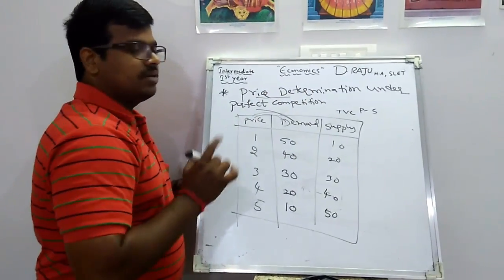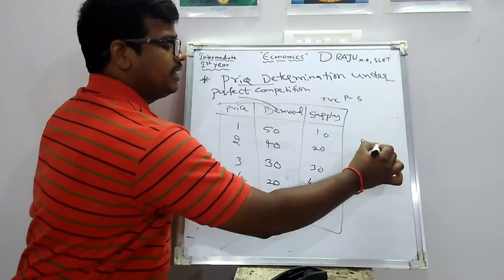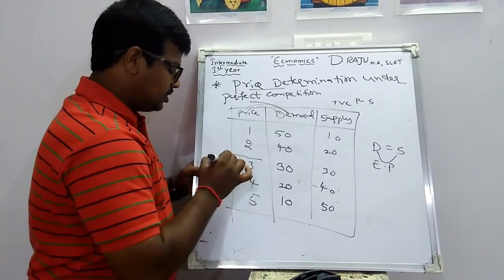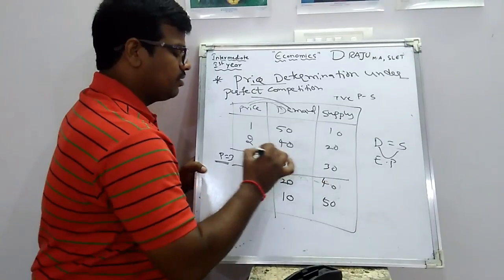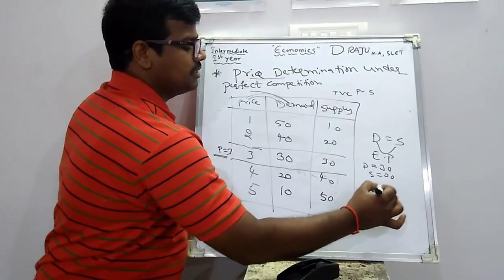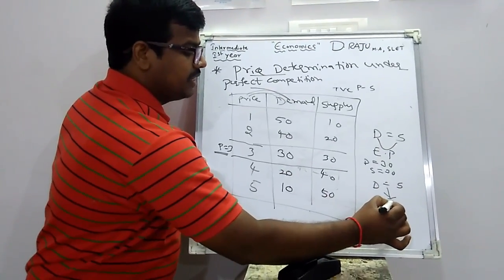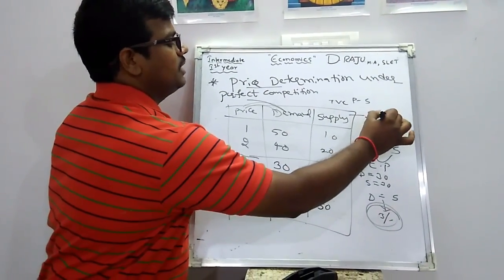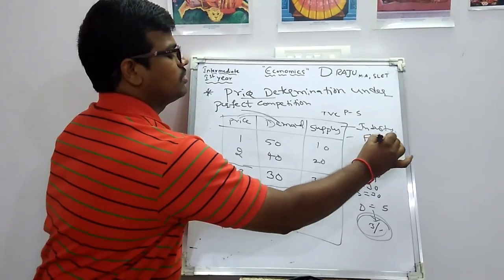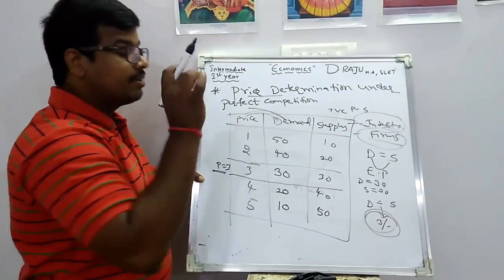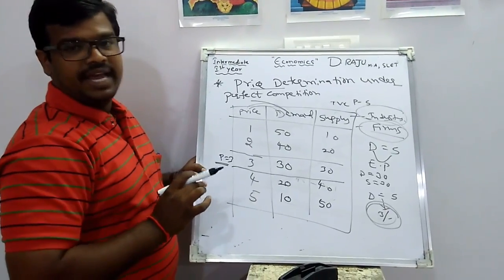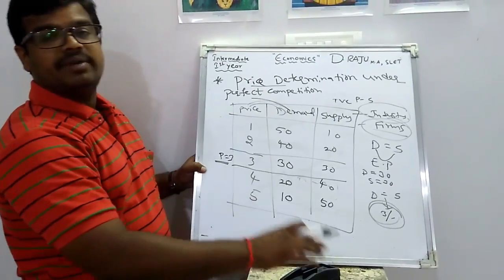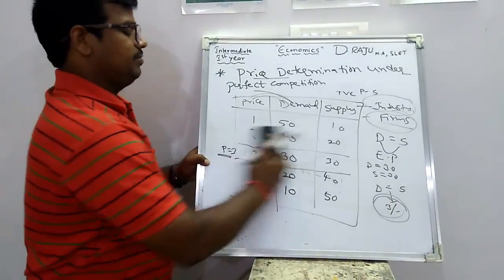In the perfect competition market, price is decided by the market where demand equals supply. At price rupees 3, demand equals 30 and supply equals 30 — that means demand equals supply. The equilibrium price of rupees 3 is decided by the market. The industry is the price maker, and all firms are price takers — the price is decided by the industry and followed by all firms.